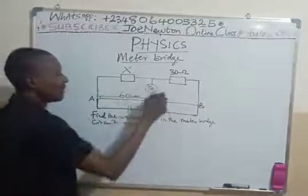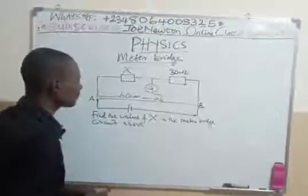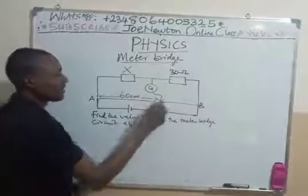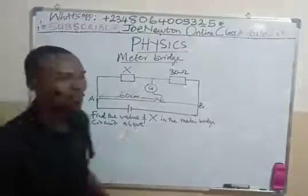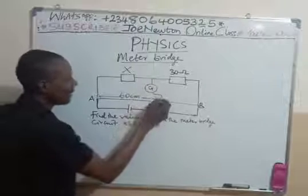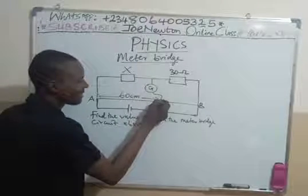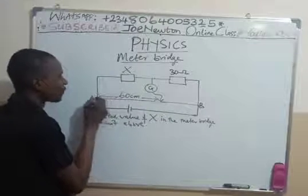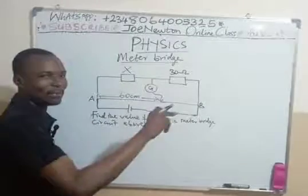Then this is the galvanometer with the jockey. Now, it was observed experimentally, according to this question, that this galvanometer balanced at the point of 60 cm from the zero point on the meter bridge.